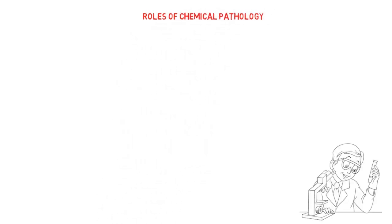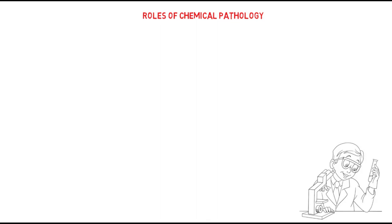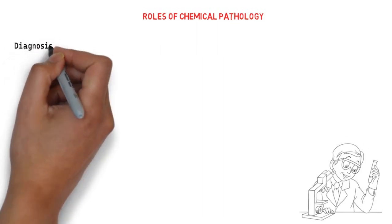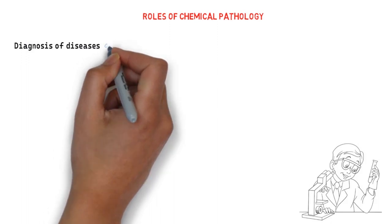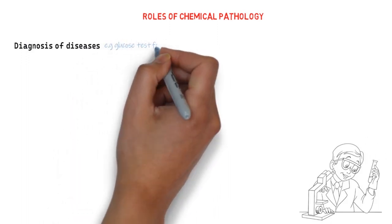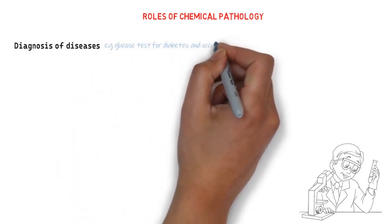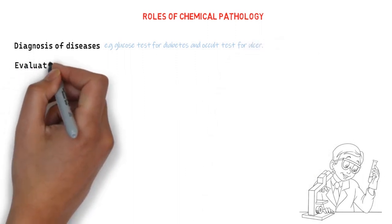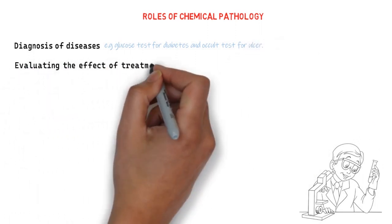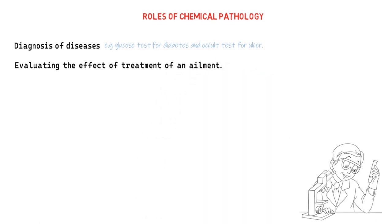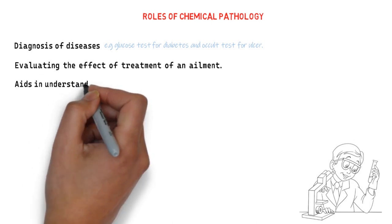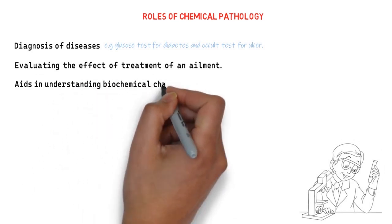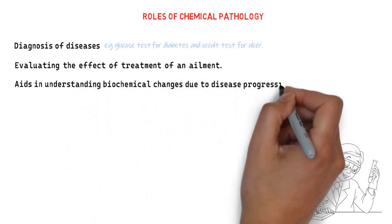The roles of chemical pathology in medical laboratory science include the diagnosis of diseases like glucose tests for diabetes and occult tests for ulcer. It's also involved in evaluating the effects of treatment of a particular ailment to check whether drugs have negative effects on other body organs or not. Also, it aids in understanding the biochemical changes due to disease progression.